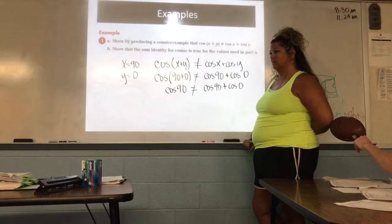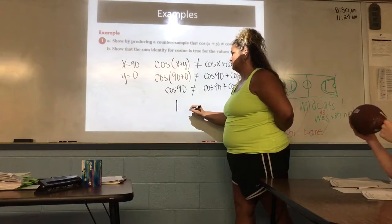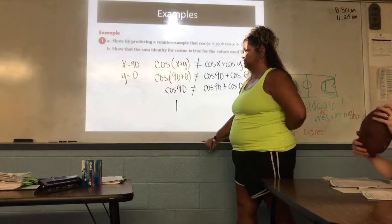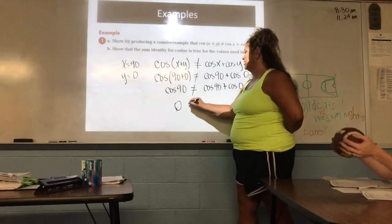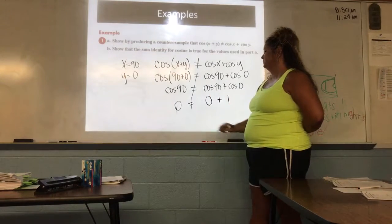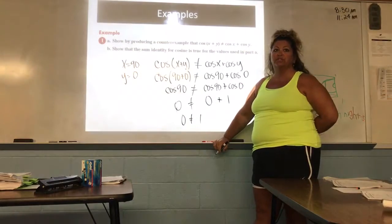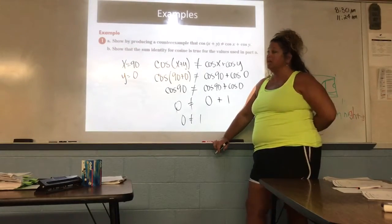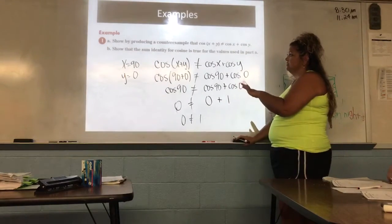So look on your unit circle. What's the value for cosine of 90? Cosine of 90 is 0. And what is cosine of 0? 1. Does 0 equal 1? No. So this is just one of the counterexamples of why we can't do this. This right here is why we have to use the identity. Here was our counterexample.